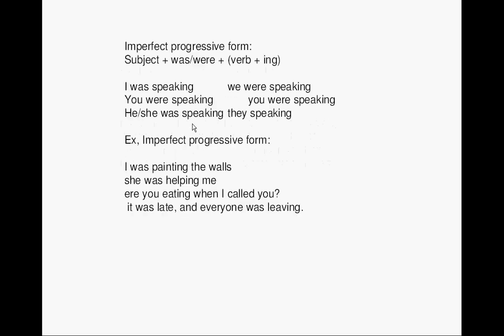Past progressive form: subject plus 'was' or 'were' plus verb ending in -ing. I was speaking, you were speaking, he or she was speaking. Example: I was painting the wall. She was helping me. Were you eating when I called you? It is late and everyone was leaving.